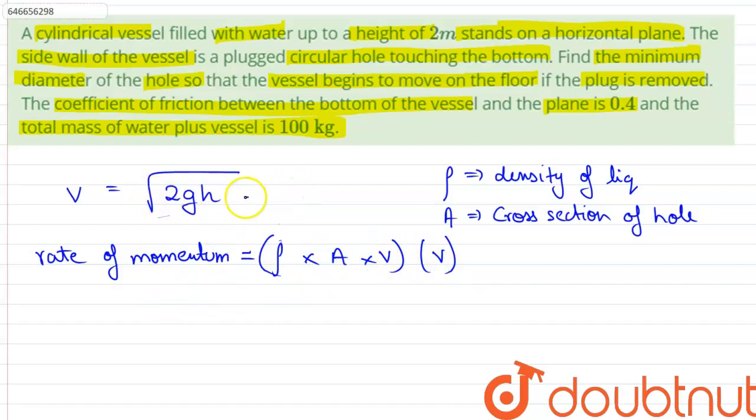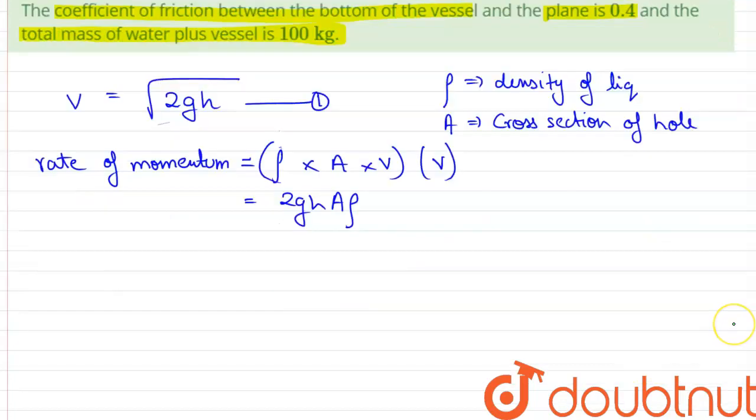Using equation number one, we can clearly write that this equals 2gh multiplied by A into rho. Therefore, the force due to the velocity of efflux, which can be denoted by F, equals the rate of momentum, and this equals 2ghA rho.